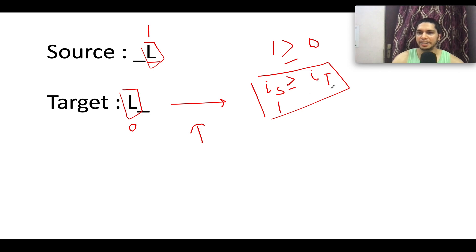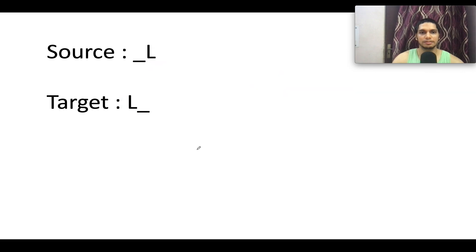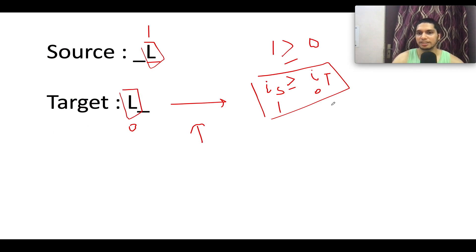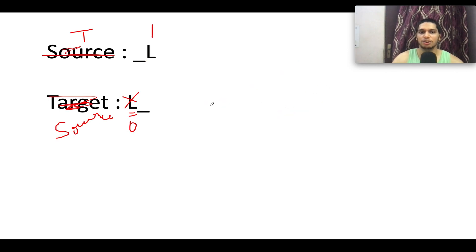In the negative case for L: if L is at index 0 in the source string and index 1 in the target string, it is already at the leftmost valid position and cannot move further right. The condition is >= it does not hold (0 is not >= 1), so we return false.